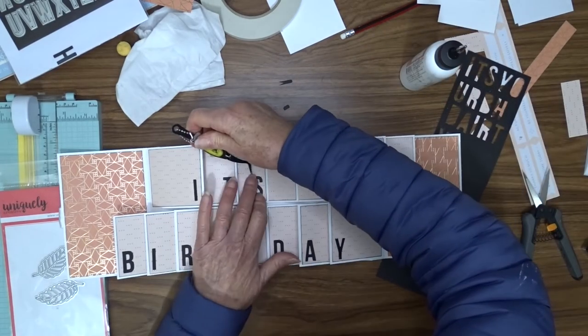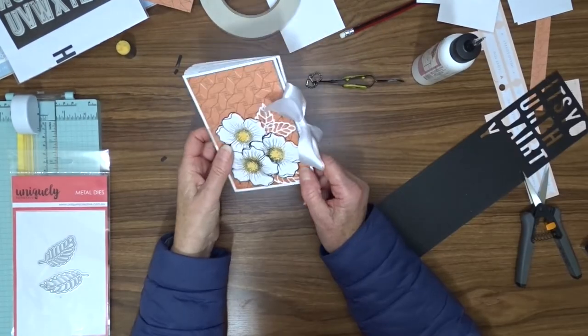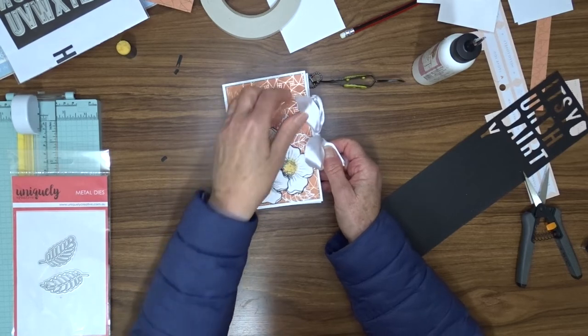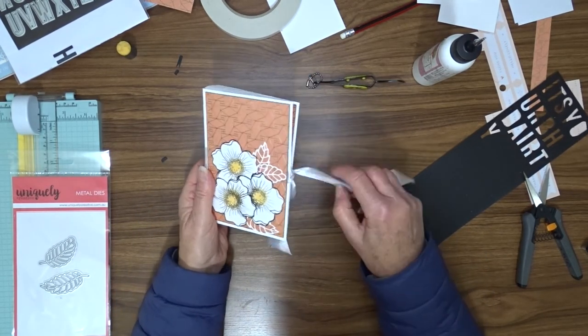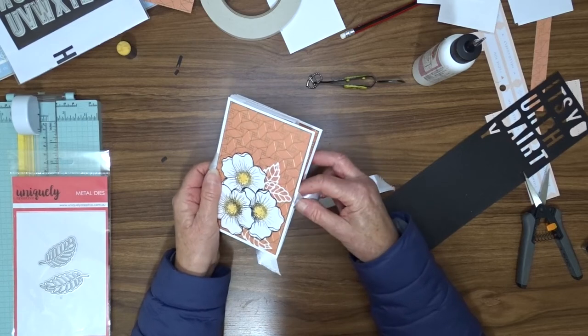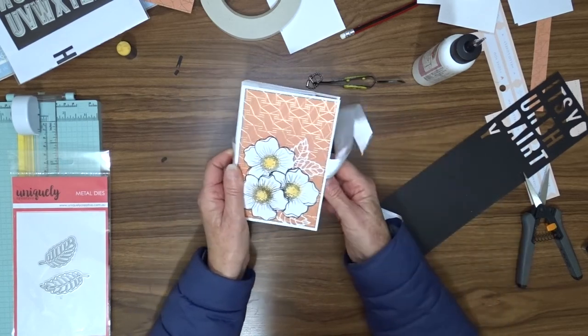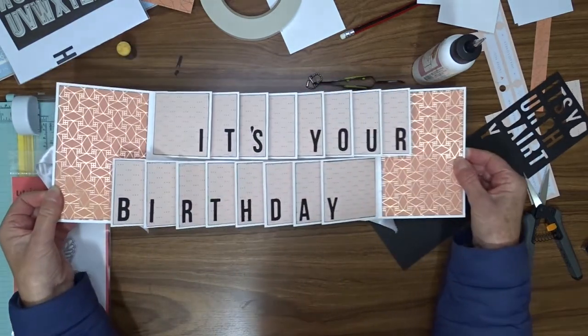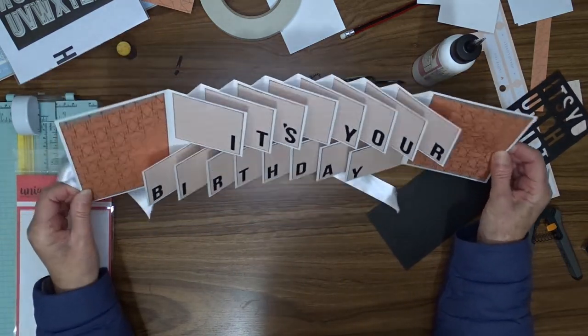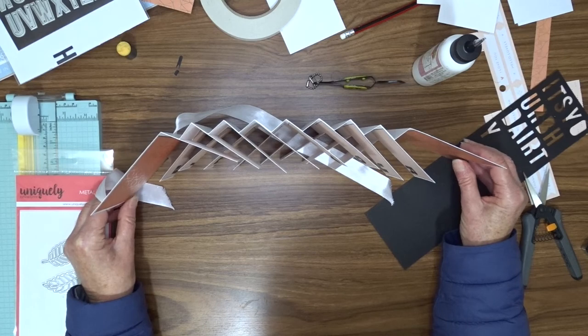So there we have our finished card. If you wanted to, you could add a piece of white cardstock to the inside back of your card so that you could write your personal message on there because this paper is a bit glossy. I will do that, I think, when I'm ready to hand this card out to somebody.